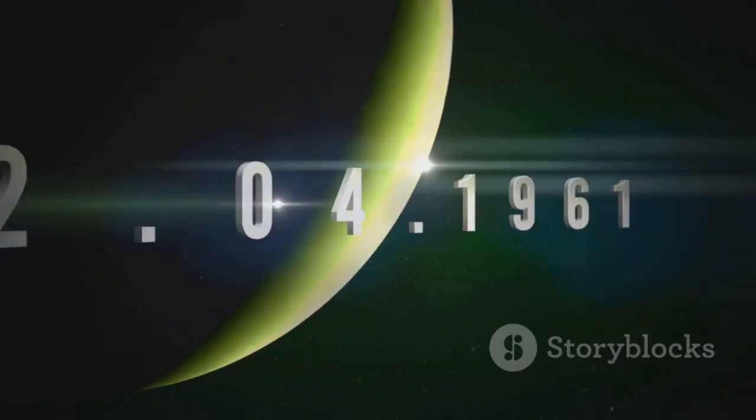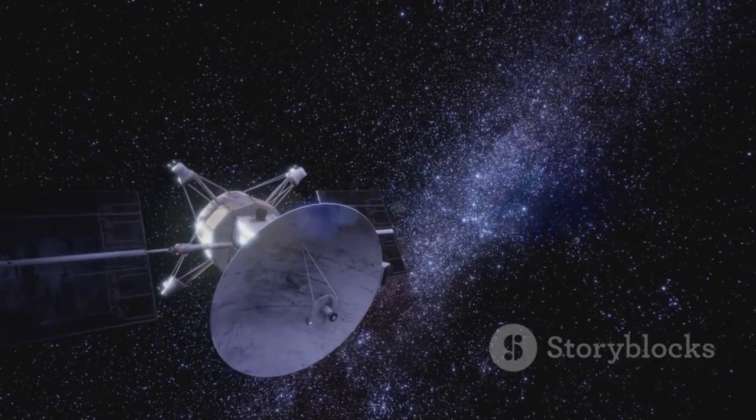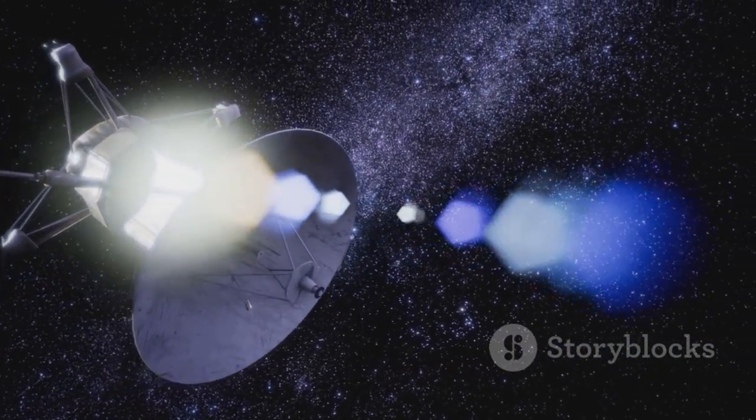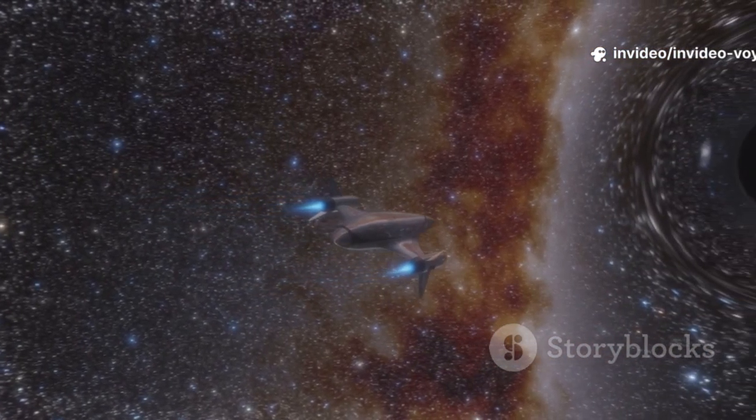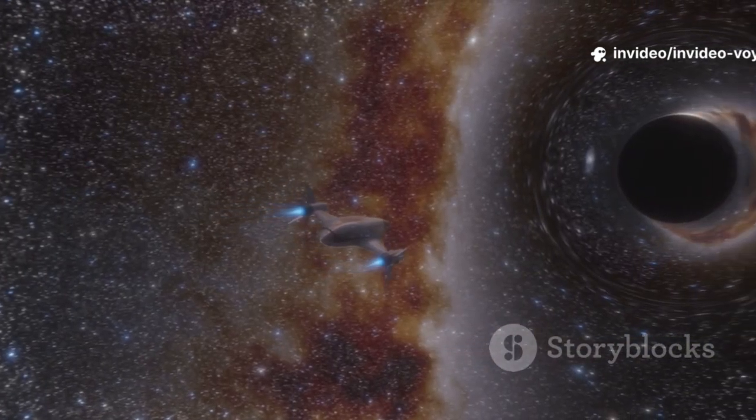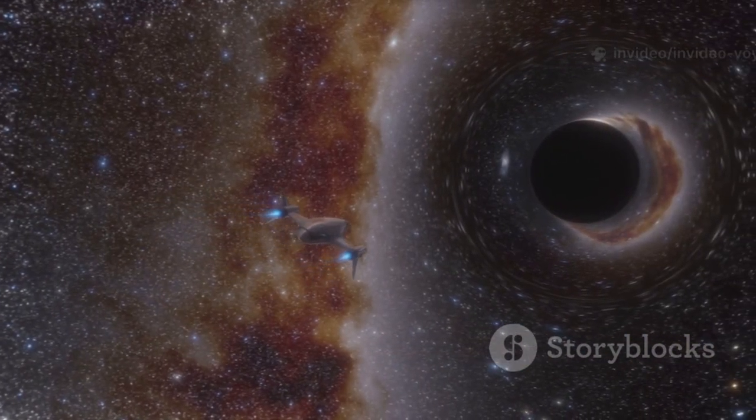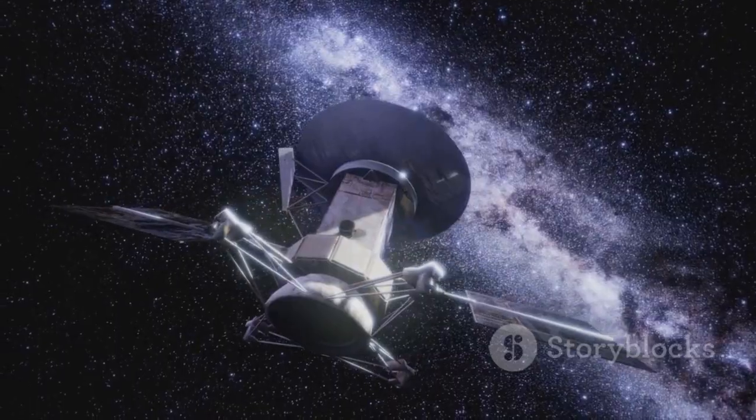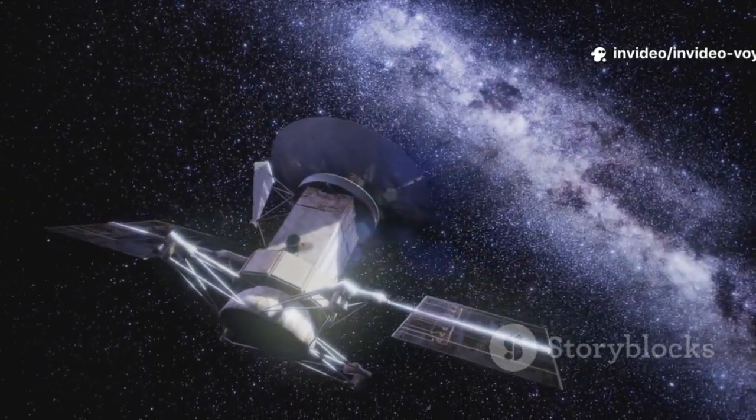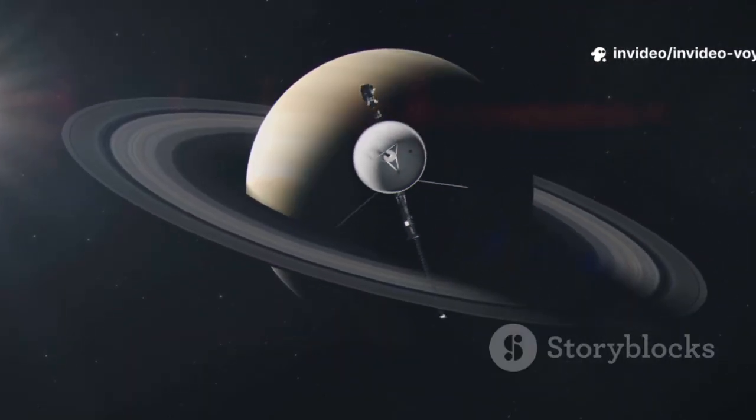In 2012, something amazing happened. Voyager 1 crossed a boundary called the heliopause. It officially entered interstellar space. That's the space between the stars. For the first time in history, a human-made object was sailing through the cosmic sea that separates star systems. It was a monumental achievement, a triumph of science and engineering. Voyager 1 became our first true interstellar traveler.